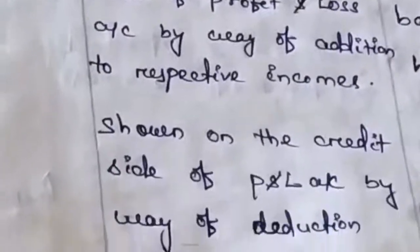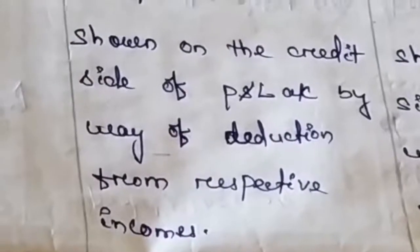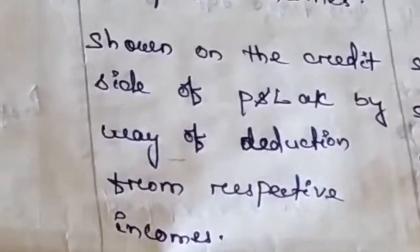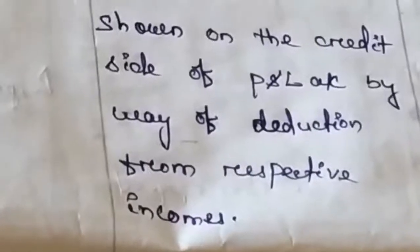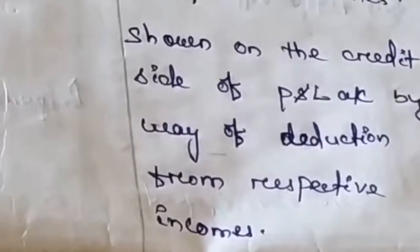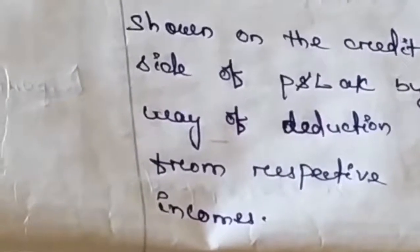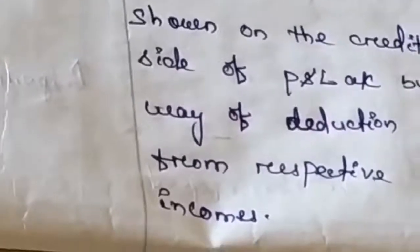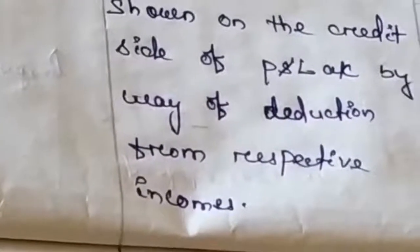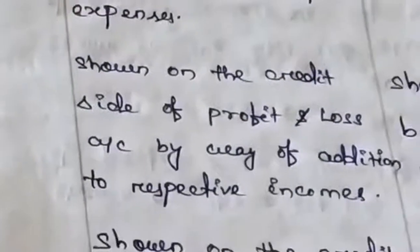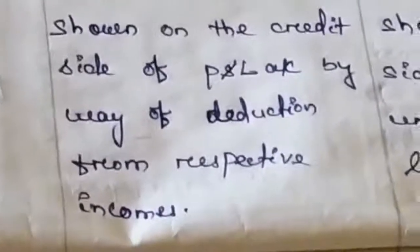The first treatment of income received in advance: being indirect in nature, the trading account column is left blank. It is shown on the credit side of the profit and loss account by way of deduction from the respective income. The deduction is made because the income received does not belong to the current accounting year but to a succeeding accounting year. This is the opposite of accrued income where you add; here you deduct.